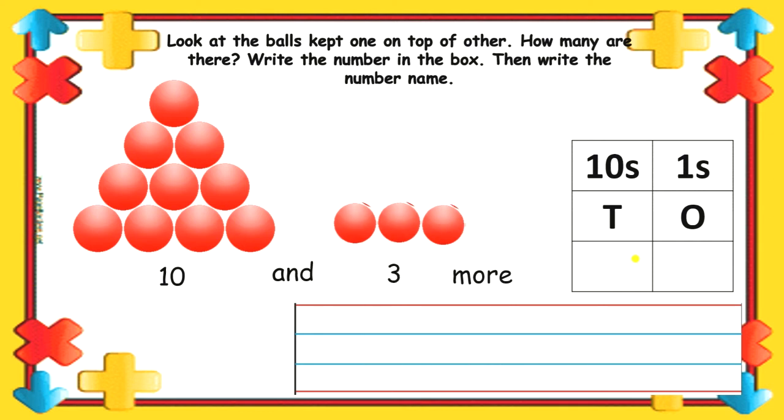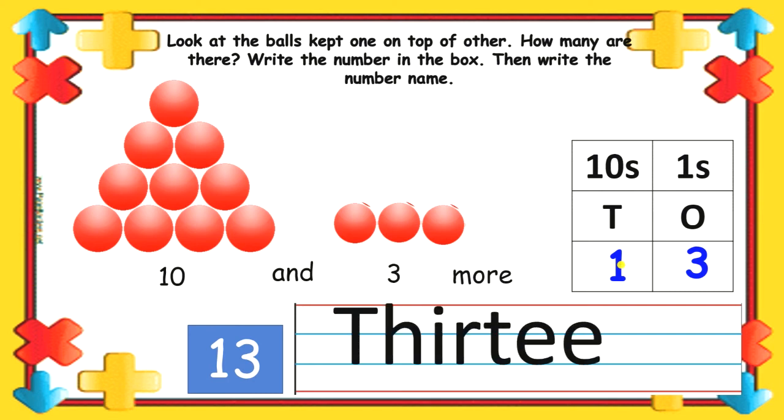Next 10 and 3 more becomes 13. So, we write 3 at 1's place and 1 at 10's place. Number name of 13 is T-H-I-R-T-E-E-N.